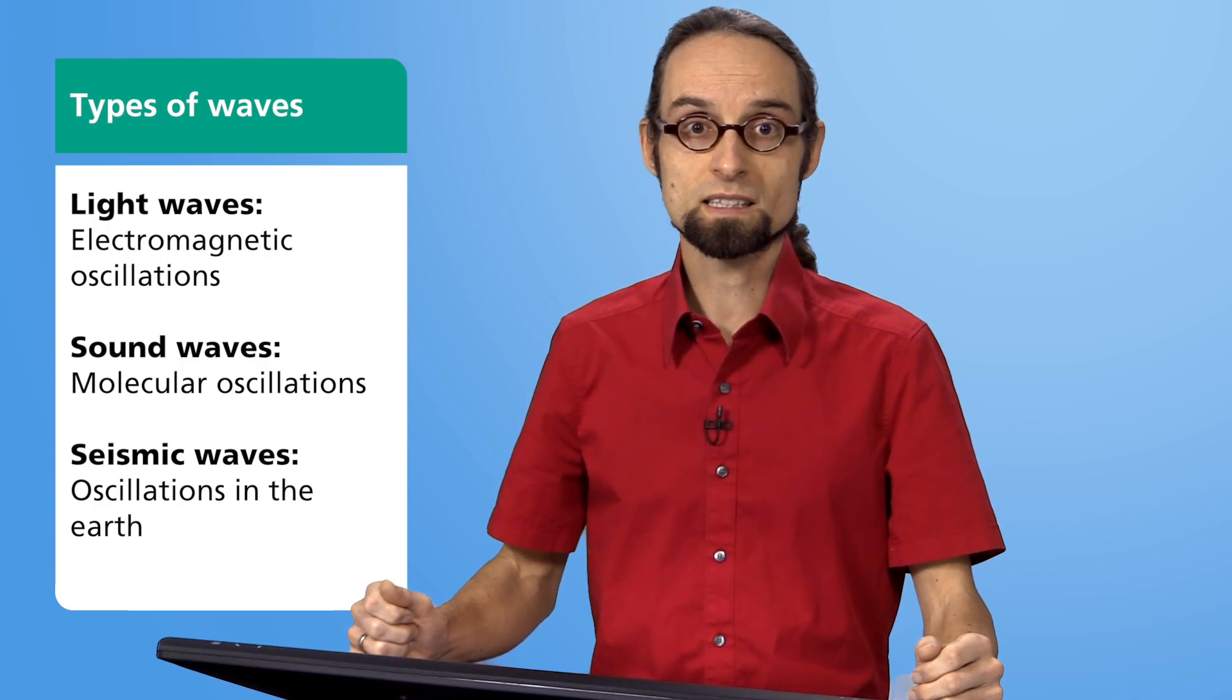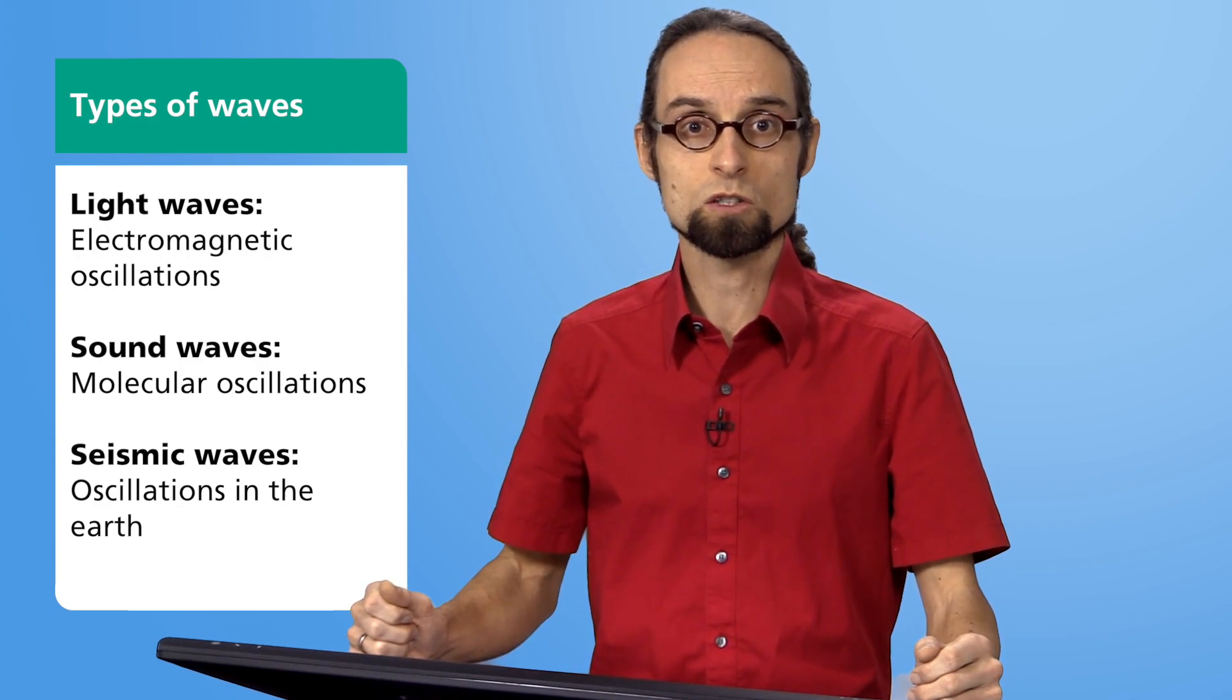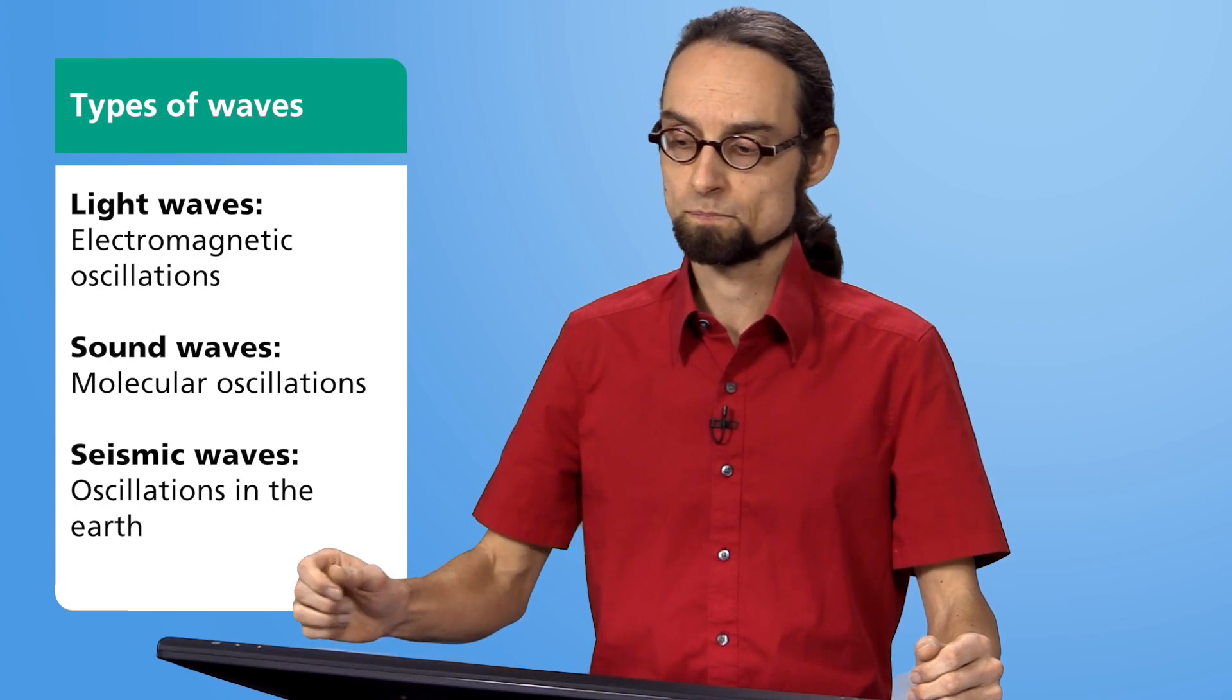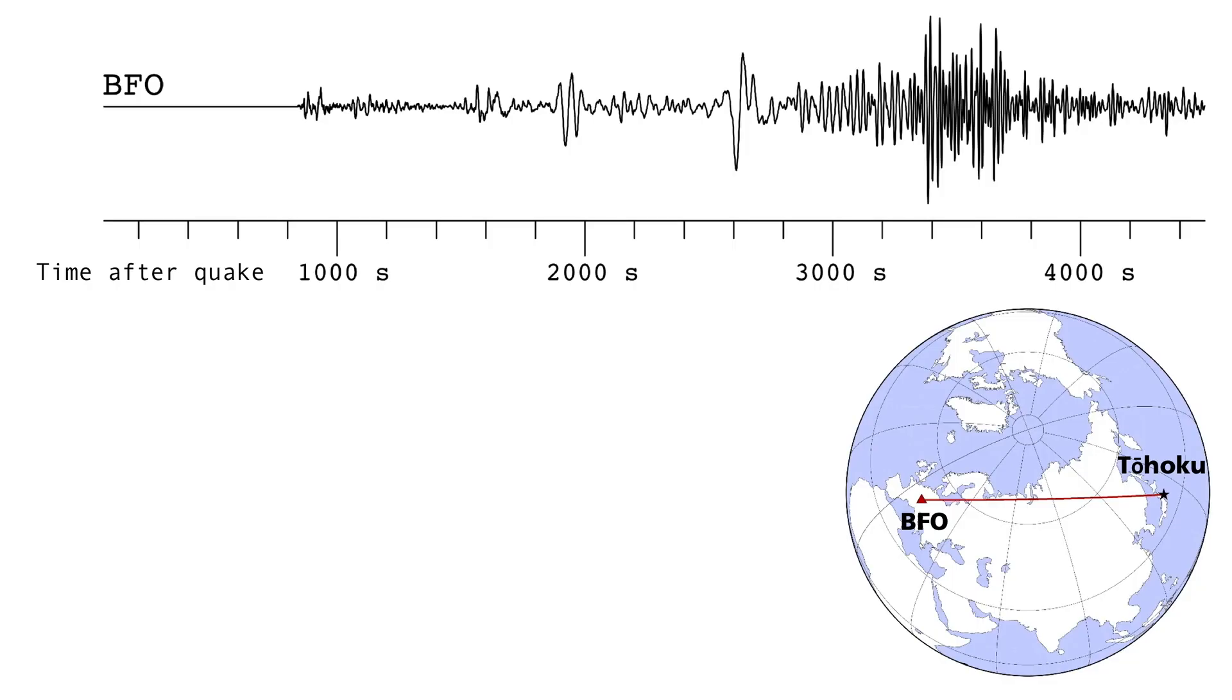Body waves also cause the earth, which in this case is the propagation medium, to oscillate. Let me show you the seismogram from the beginning again. It records vertical ground motion, that means the rise and fall of the earth's surface.